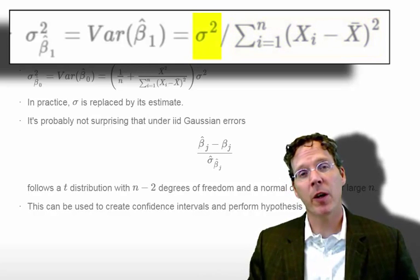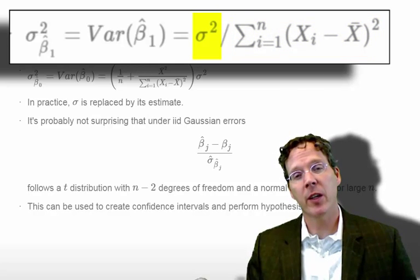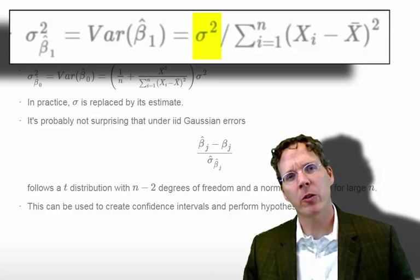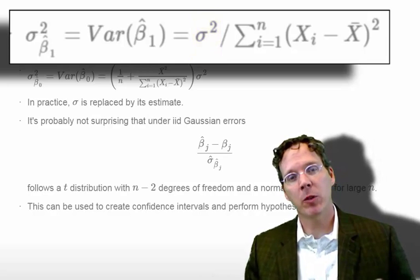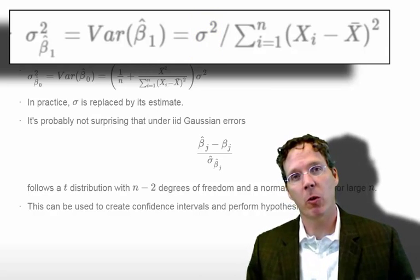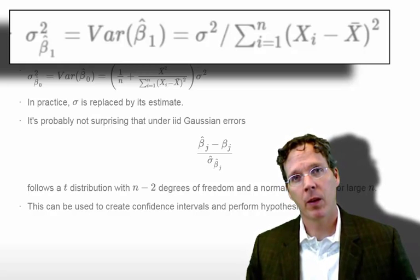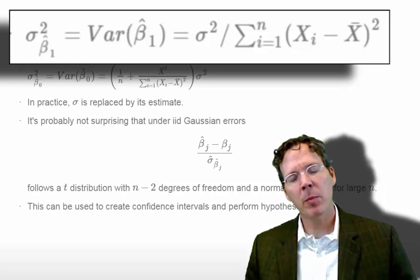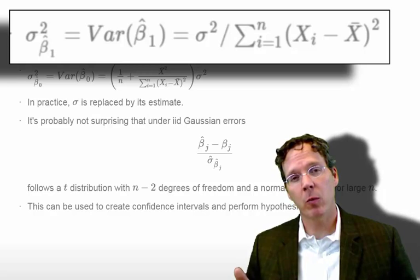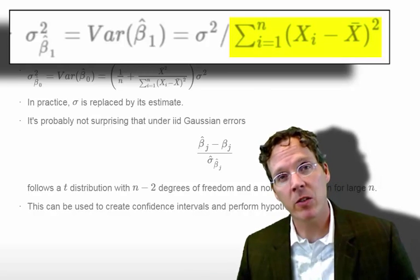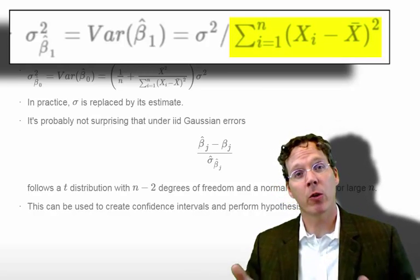Now I think the numerator, how variable the points are around the regression line, is somewhat understandable as to why we would get better estimates of our regression slope if that were smaller. However, it's maybe less intuitive to understand why we want more variance in our predictor in order to get lower variance in our regression slope.